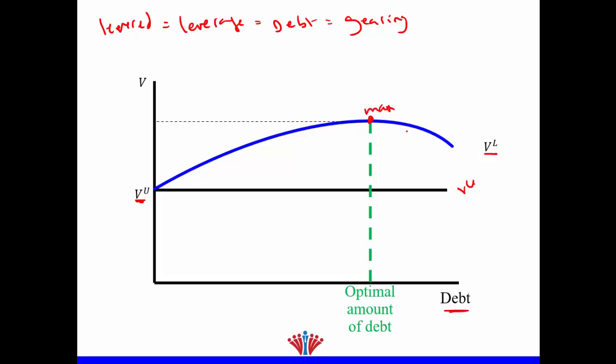The firm value increases until it reaches the maximum point, and then it decreases again. Therefore, if you are a finance manager, the optimum level of debt is the one that maximizes your firm value — at this point, which we write as D*, referring to our optimal amount of debt. This optimal debt level differs from one company to another.